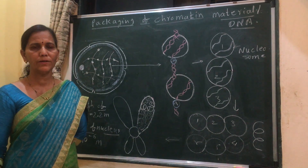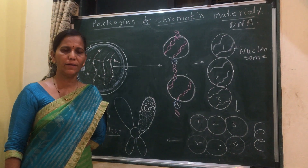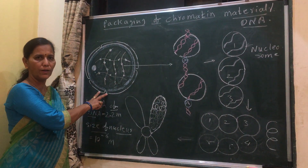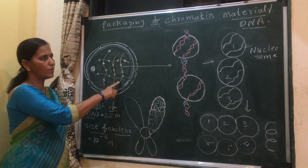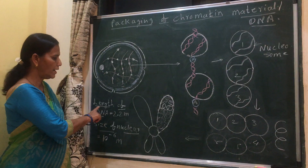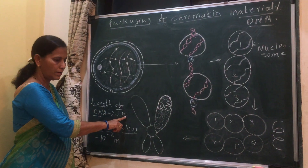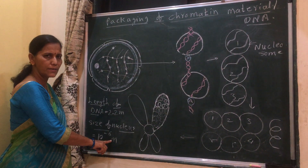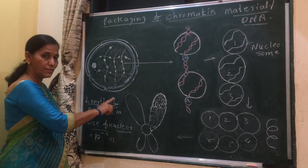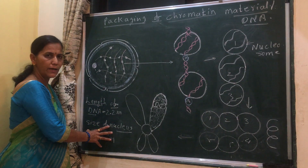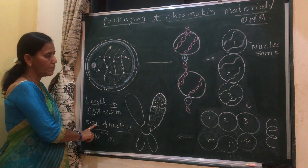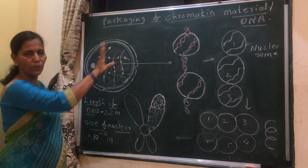Today's topic is packaging of chromatin material or DNA. I already explained the structure of the eukaryotic nucleus — it consists of chromatin reticulum. In a mammalian cell, the length of DNA is 2.2 meters, but the size of the nucleus is 10 raised to minus 6 meters. How does this larger material get accommodated in such a smaller space? It gets accommodated due to the packaging of chromatin material.